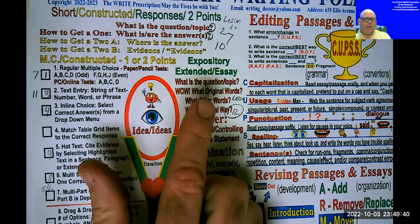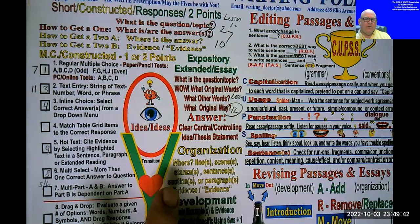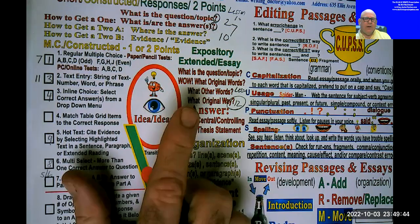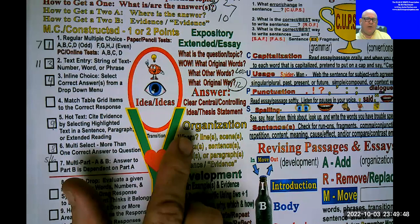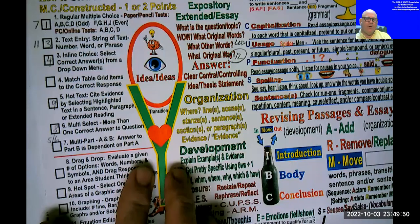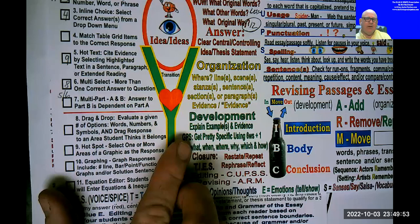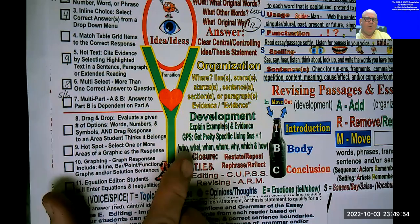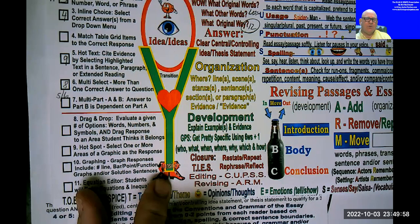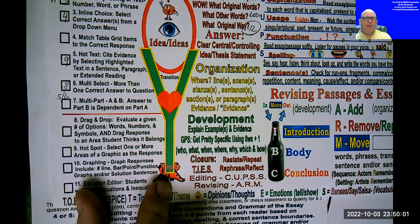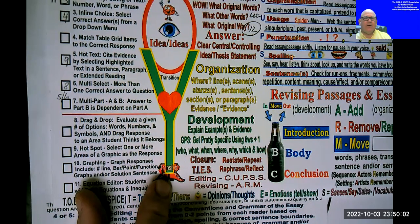Everybody is going to get one extended essay response, where you go from a red light — a zero — to a one yellow light, to a two green light, to a three, and then you can get a four or five based on good editing and revising, like a paired passage where you tie everything together effectively.